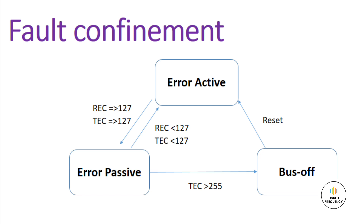The next state is the error passive state. If either the transmit error counter or receive error counter is greater than 127 and the TEC value is less than 255, then the CAN device goes into passive error state. In this state, the CAN node is still able to transmit data, but now it raises a passive error flag when detecting errors.